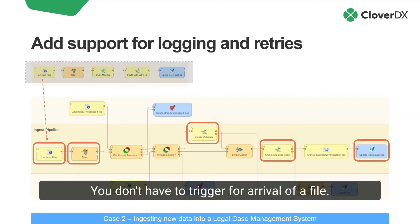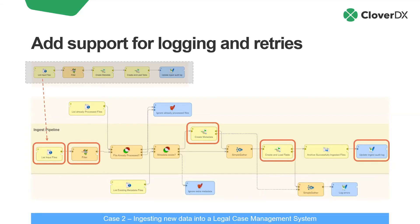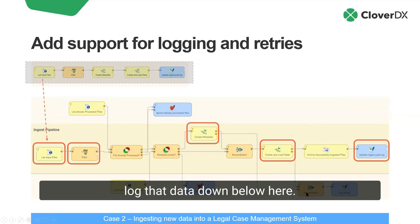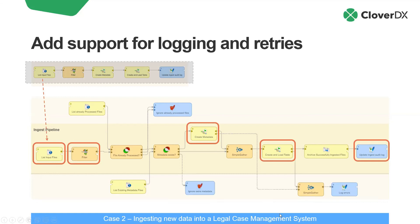You don't have to trigger on arrival of a file — just run it on demand. And here's where our logging occurs: if errors occur in any step, we log that data.